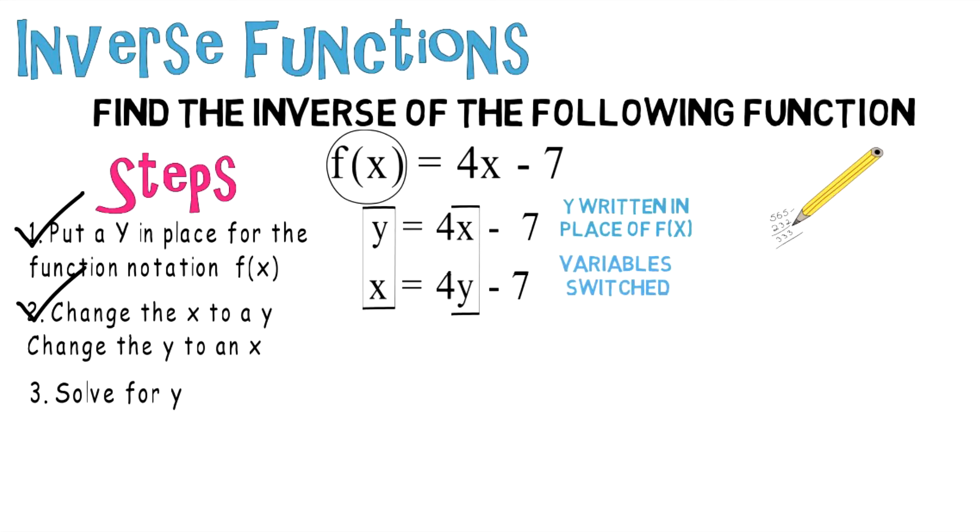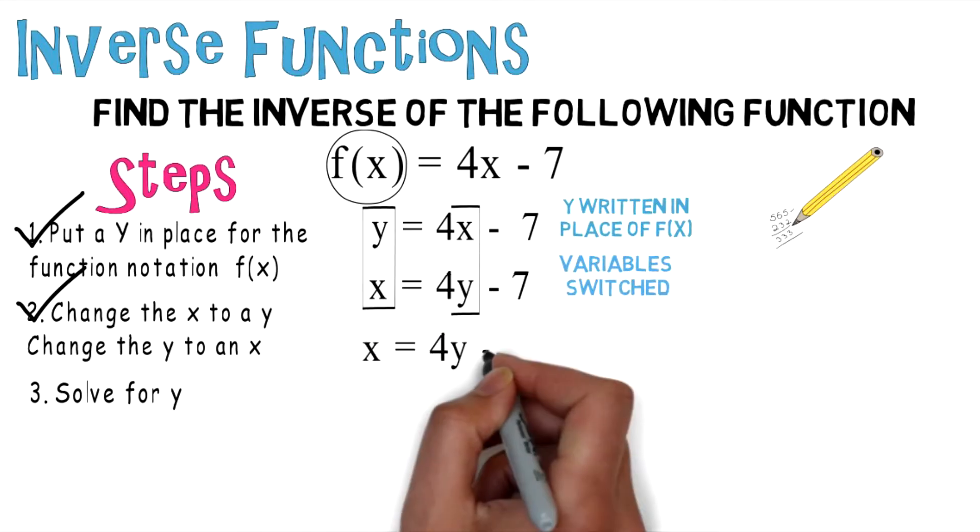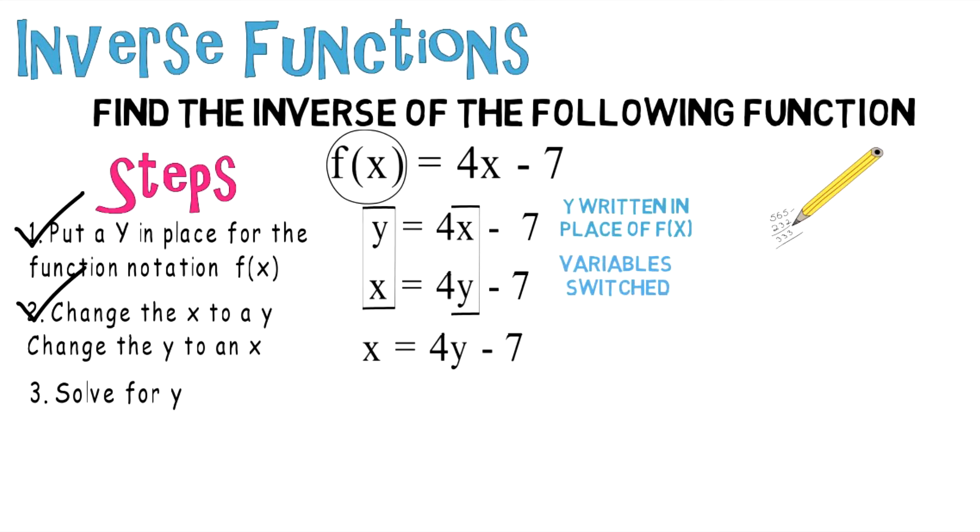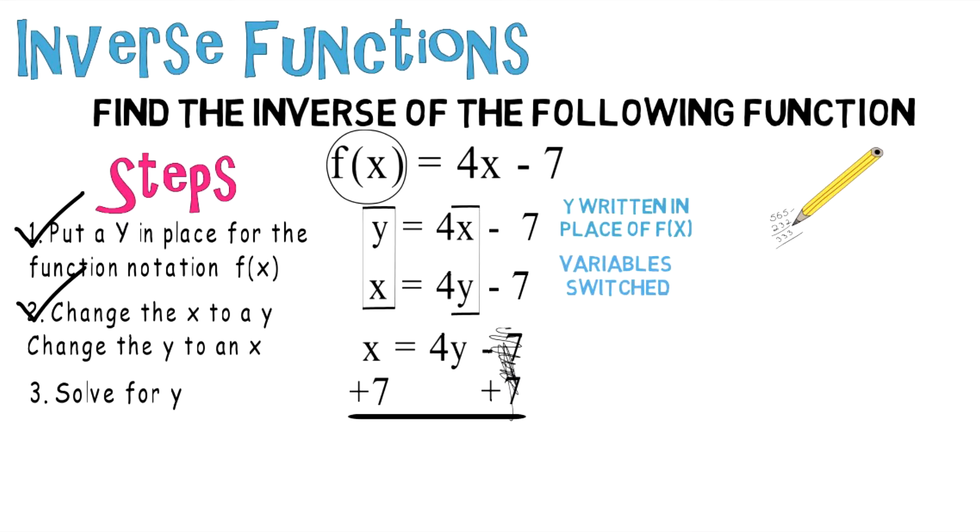Which is solve for y. x = 4y - 7, and to solve for y we're going to add 7 to both sides of the equation. Negative 7 and positive 7 cancel each other out, and you wind up with x + 7 = 4y. In order to solve, we're going to divide both sides by 4. 4 and 4 cancel each other out.